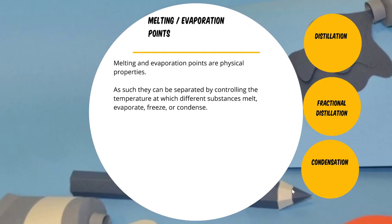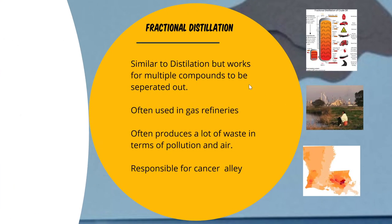Distillation isn't just used for alcohol. One of the big things we use it for is separating out the different compounds within crude oil. When you get a large barrel of oil, you're going to have a lot of different compounds in there — kerosene, gasoline, large molecules that are precursors for asphalt, methane, and more. You can make a large column with a whole bunch of different temperatures in it, and all of those different compounds will end up boiling off at those different temperatures so you can separate them out.